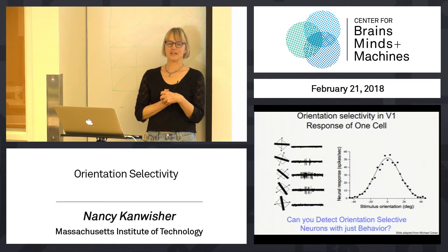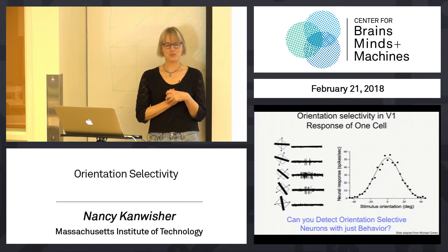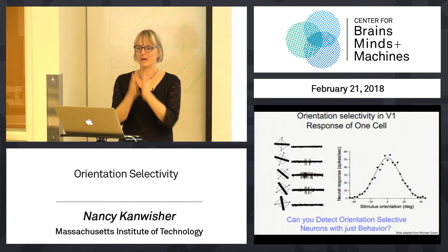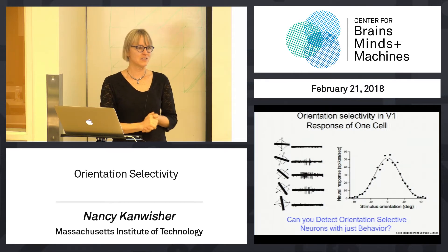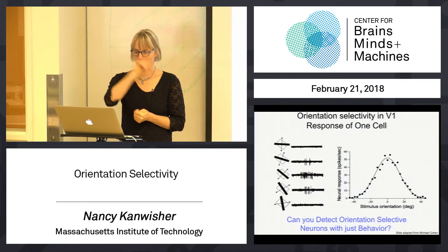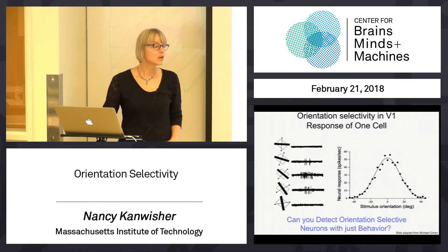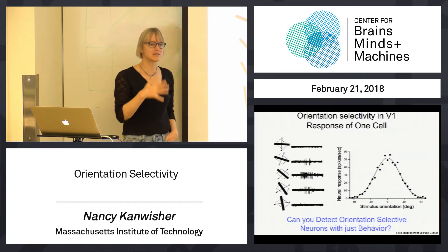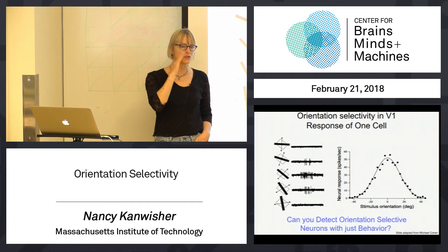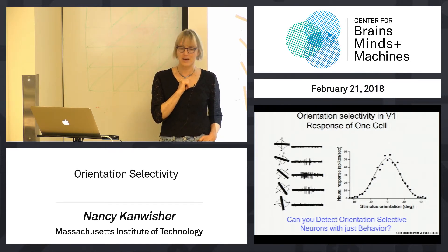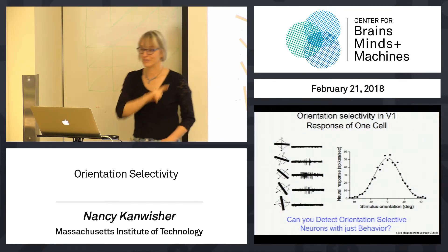Is there any way to detect orientation selectivity just with behavior? It seems like — how would you do that? We're recording from neurons in the middle of the system. What could we do behaviorally to tell us about orientation selectivity in the brain? But there is a way. In fact, this was hypothesized way before Hubel and Wiesel. Could we discover that there are neurons in your visual system tuned to specific orientations without making a measurement from neurons — just measuring behavior? We're going to discover it right now.